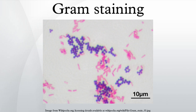Gram negative bacteria generally possess a thin layer of peptidoglycan between two membranes. Most bacterial phyla are Gram negative, including the cyanobacteria, spirochetes, and green sulfur bacteria, and most proteobacteria including Escherichia coli.